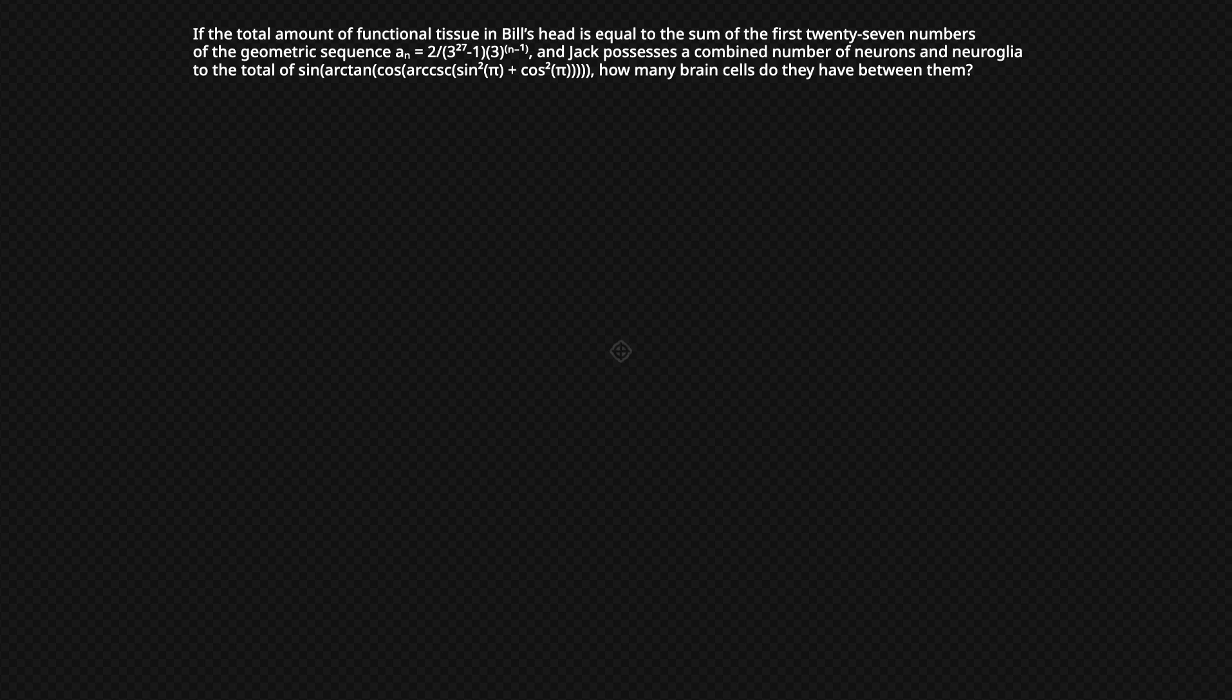So I was really cruel and unfair for putting a math problem in this week's silly poll, so we're going to solve it together. We have a word problem here. What we're trying to find is the number of brain cells that Bill and Jack have between them. So it's a pretty simple equation. We just need to find out what B and J are, and we are given equations for them.